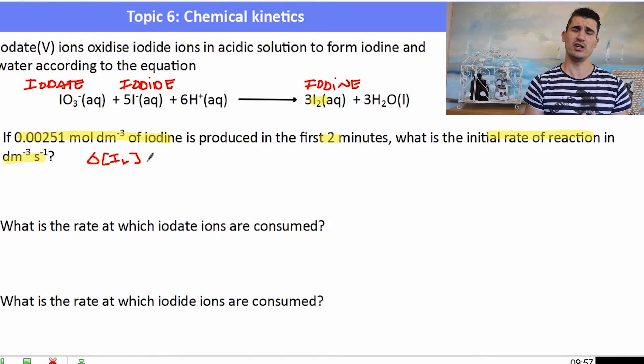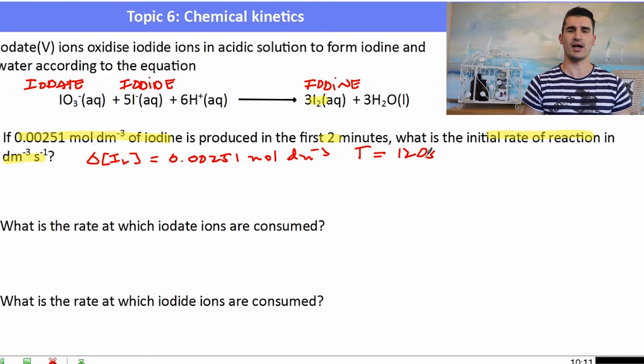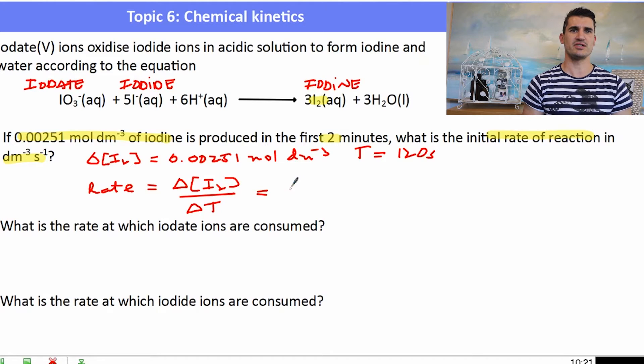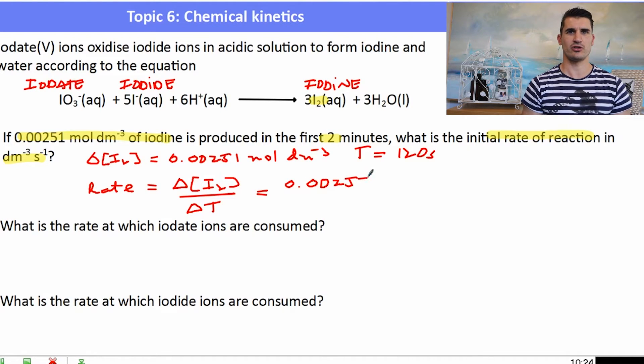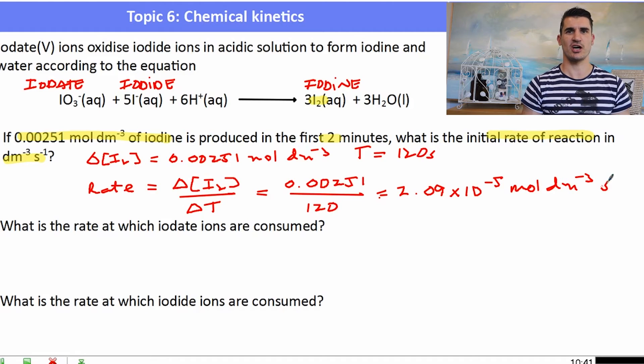So the change in concentration of I2 and it's a product so it's forming is 0.00251 because there was none at the start. And that formed in two minutes but our unit needs to be in seconds so that means I need to change this to 120 seconds. So my rate is simply my change in concentration over my change in time. So in this case it would be 0.00251 divided by 120 and that's going to give me my rate of iodine production. The units for this reaction they were told in the question but we also need to remember that it's mole per decimetre cubed per second because we've changed the time to per second and this is the one that they'll generally express the rate in.